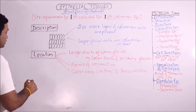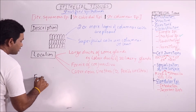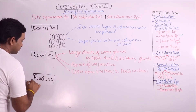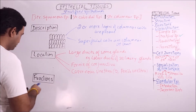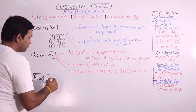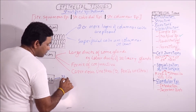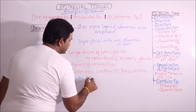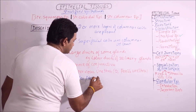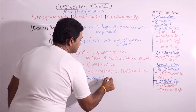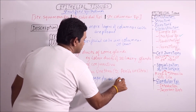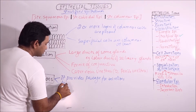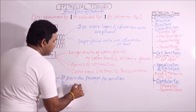Now, the functions. Stratified Columnar Epithelium provides passage for secretions and also acts as a barrier.